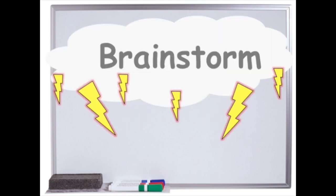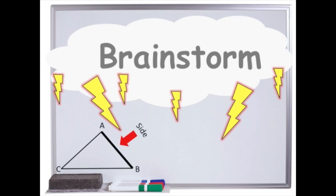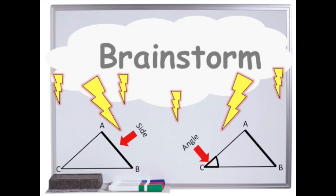In a moment you'll have to pause the video to see if you can brainstorm four ways to tell if two triangles are the same. But first, here are two hints. Use the word side and the word angle and time to brainstorm. See if you can come up with four different ways to tell two triangles are the same or congruent. Press pause now.